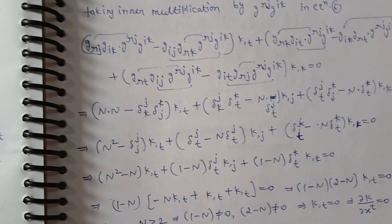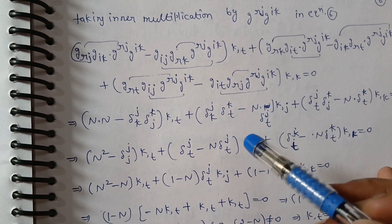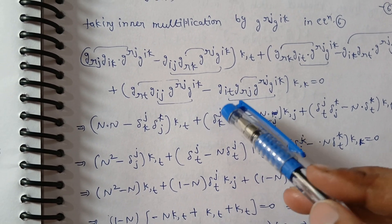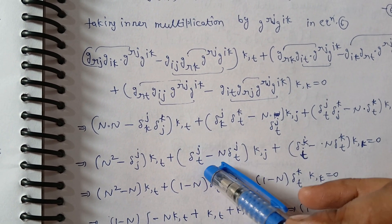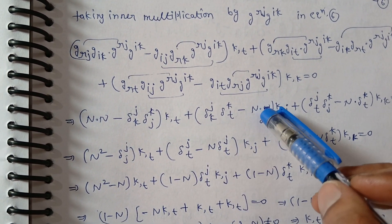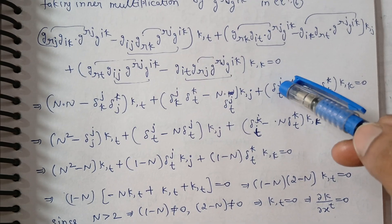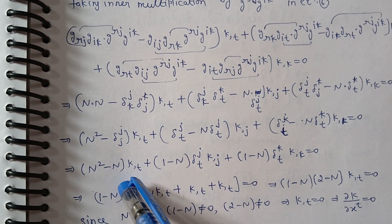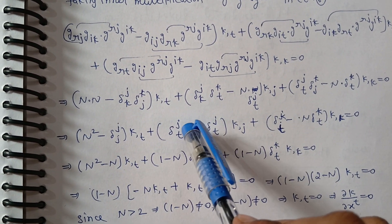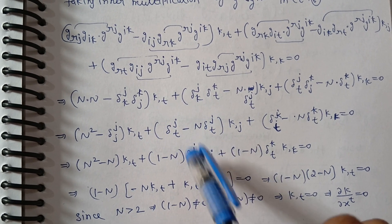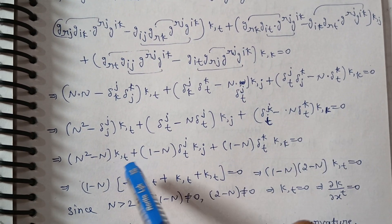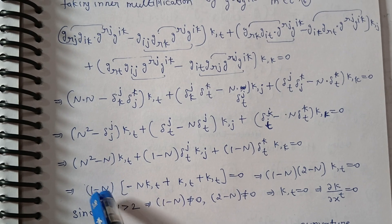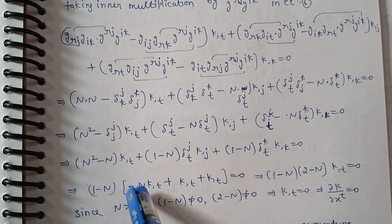After contraction we obtain del_j terms on both sides. Taking common factors out, we find that (1 minus n) is common. This gives us the expression with factor (1 minus n) extracted.